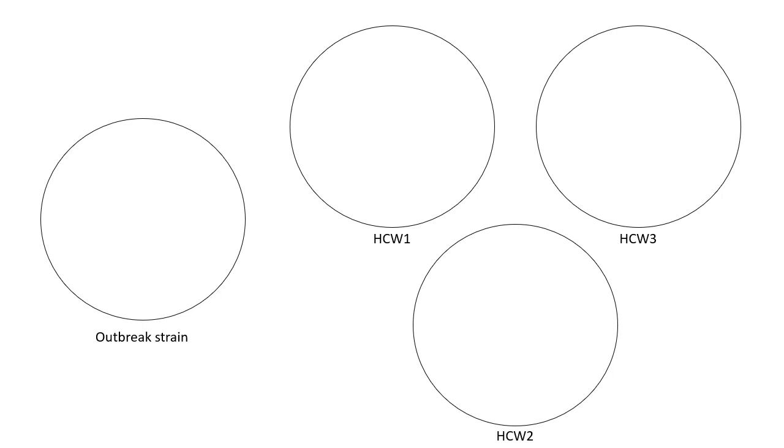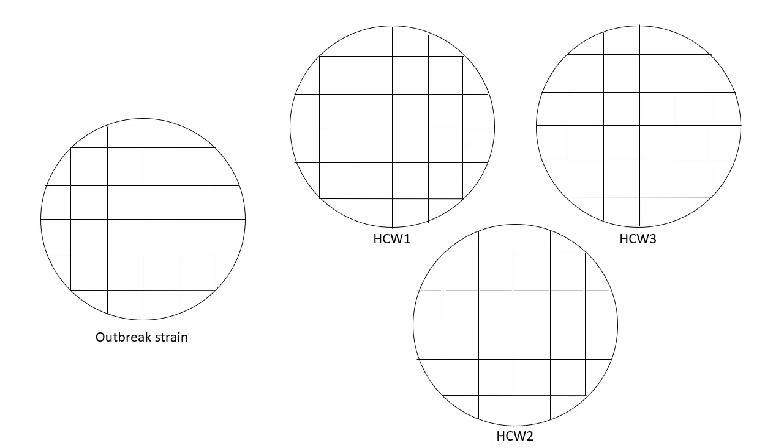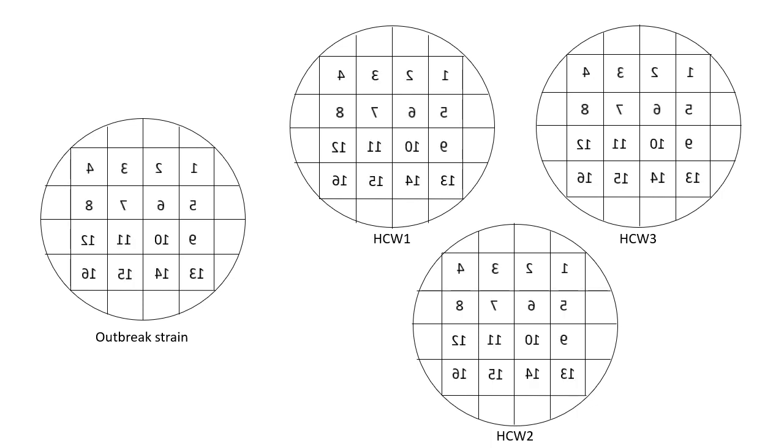Now before we start our culture, what we're going to do is at the back of the culture plate we are going to draw a grid as shown in the figure and then we are going to number the grid as shown in the figure. If you notice, you are seeing all the numbers as a mirror image and the reason for that is because you are writing out these numbers at the back of the culture plate and you're looking at the culture plate from the top.